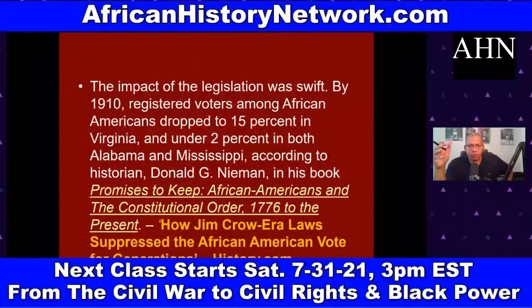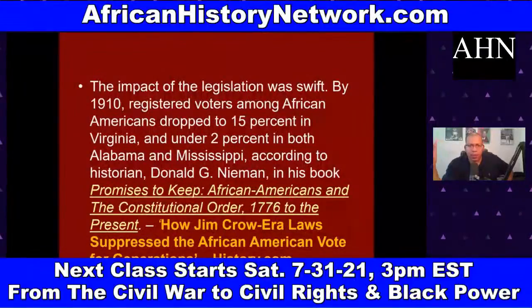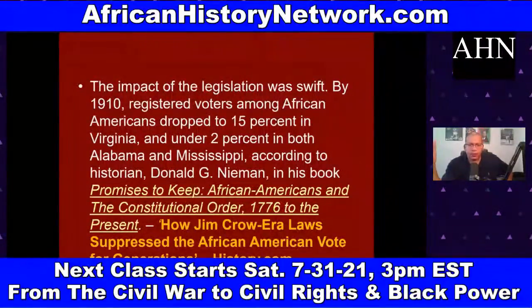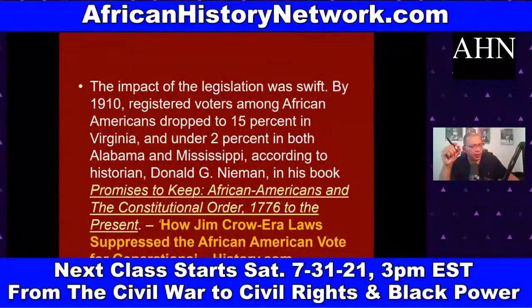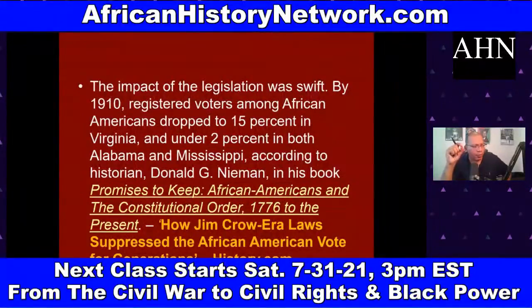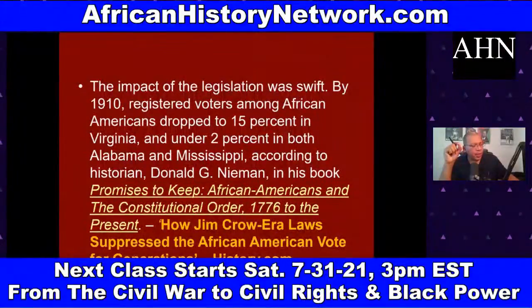By 1910, registered voters among African Americans dropped to 15% in Virginia and under 2% in both Alabama and Mississippi, according to historian Donald G. Nieman in his book 'Promises to Keep: African Americans and the Constitutional Order, 1776 to Present.' This is also covered in the History Channel article 'How Jim Crow Era Laws Suppressed the African-American Vote for Generations.'